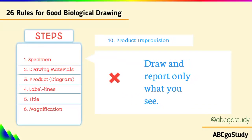Number ten, product improvisation: draw and report only what you see, and do not reproduce diagrams seen in textbooks. A part may be intentionally removed by the examiner. For example, if an examiner removes one antenna from a cockroach, those who checked the specimen carefully will draw one antenna, while those who did not check will draw two — and this will be used to sort marks.